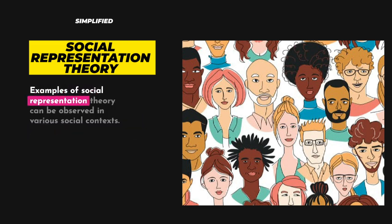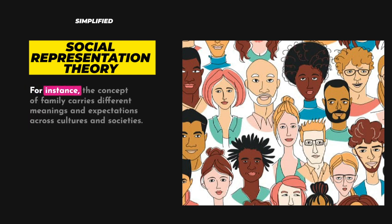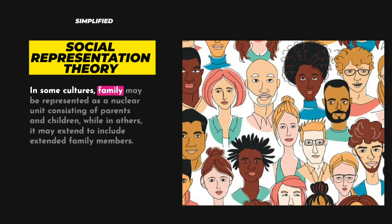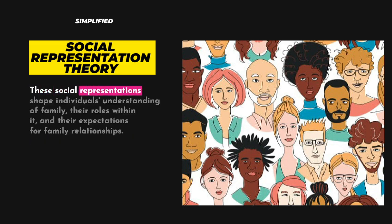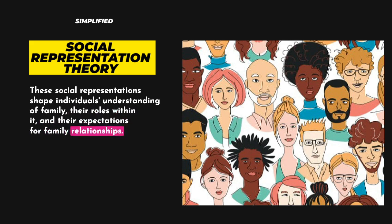Examples of social representation theory can be observed in various social contexts. For instance, the concept of family carries different meanings and expectations across cultures and societies. In some cultures, family may be represented as a nuclear unit consisting of parents and children, while in others, it may extend to include extended family members. These social representations shape individuals' understanding of family, their roles within it, and their expectations for family relationships.